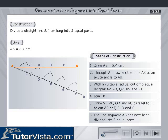The line segment AB has now been divided into 5 equal parts. Therefore, AC equals CD, equals DE, equals EF, equals FB.